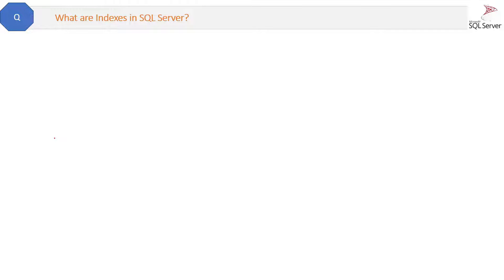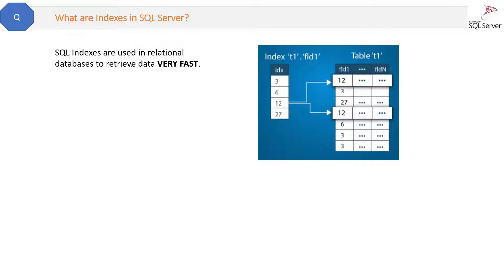What are indexes in SQL Server? In simple words, SQL indexes are used in relational databases to retrieve data very fast. Or we can say, to improve the performance of queries, we apply indexes on columns.